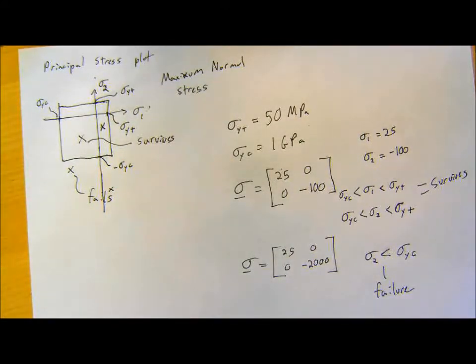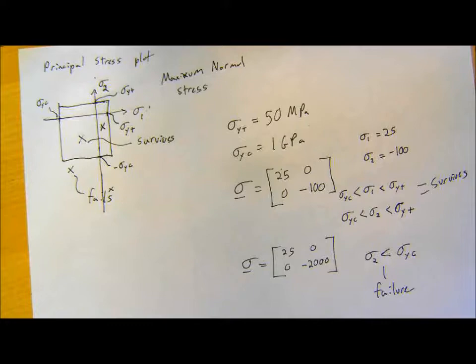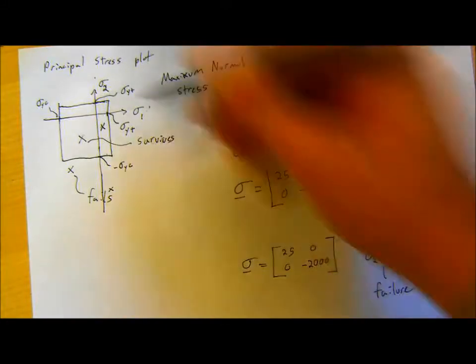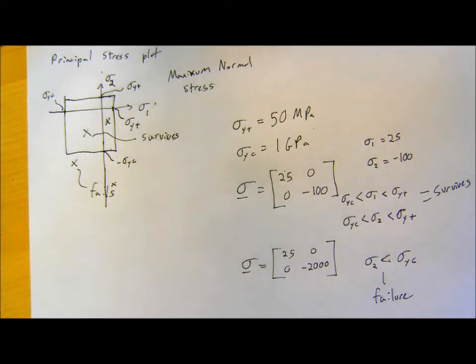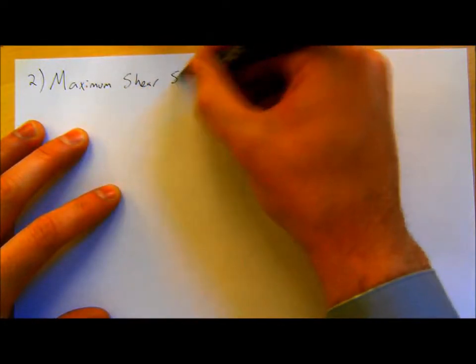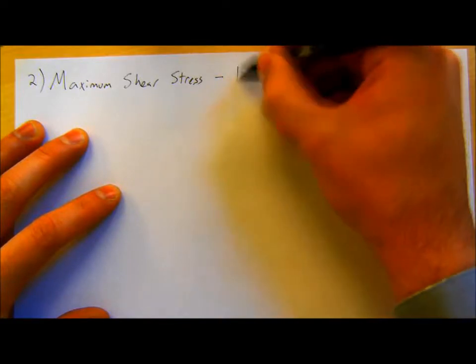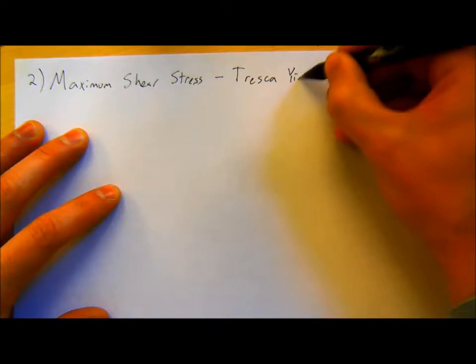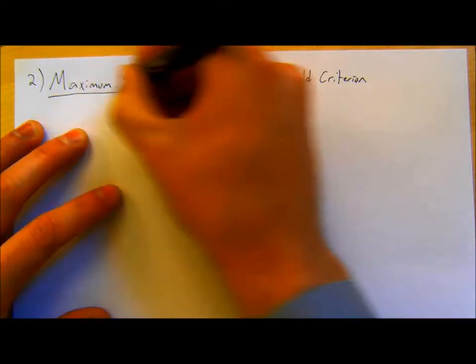This is the simplest stress yield criterion we can have: we figure out the principal stresses; if one is greater than the tension yield or less than the compression yield, it fails. There are ways to make it more complicated and more interesting. A second one is the maximum shear stress criterion, also known as the Tresca yield criterion. Tresca was a French mathematician who came up with this in 1864 — his name is actually on the Eiffel Tower.